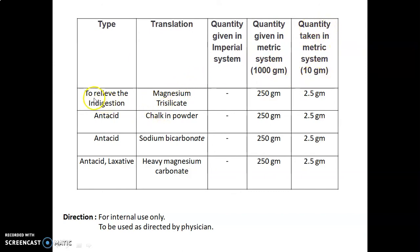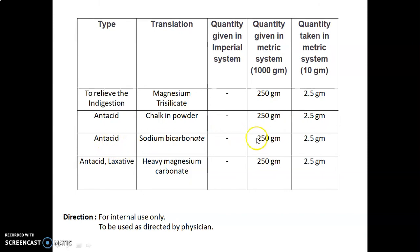Magnesium trisilicate is used to relieve indigestion problems; quantity given is 250 grams, quantity taken is 2.5 grams. Chalk powder, which is calcium carbonate, is used as an antacid; quantity given is 250 grams, quantity taken is 2.5 grams. Sodium bicarbonate is used as an antacid; quantity given is 250 grams, quantity taken is 2.5 grams. Heavy magnesium carbonate is used as an antacid and laxative; quantity given is 250 grams, quantity taken is 2.5 grams.